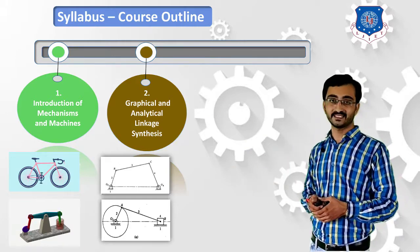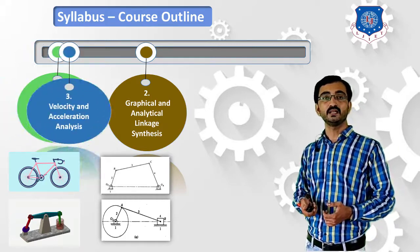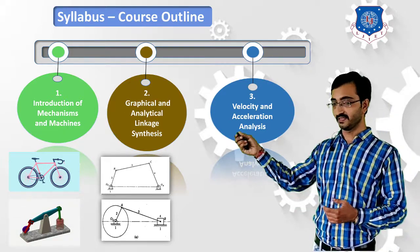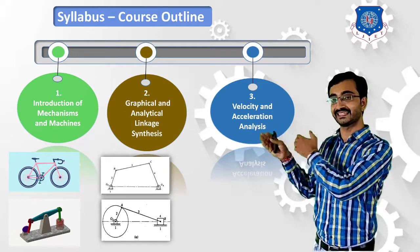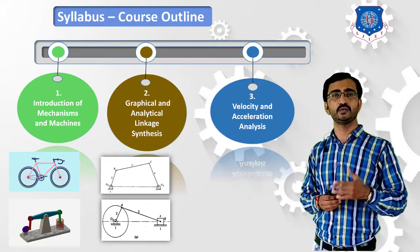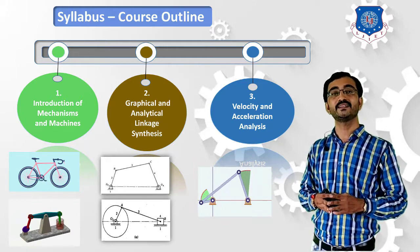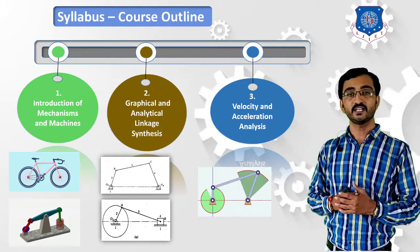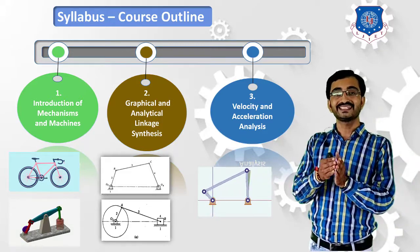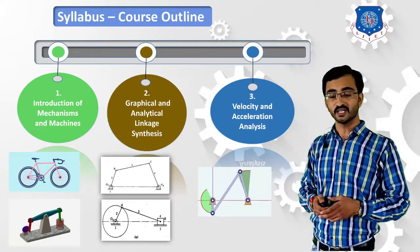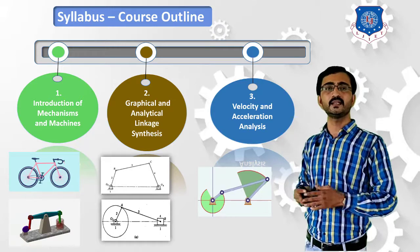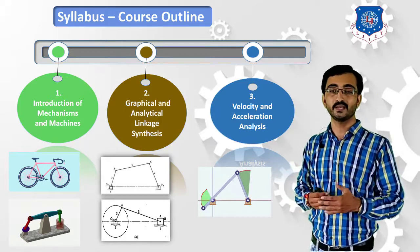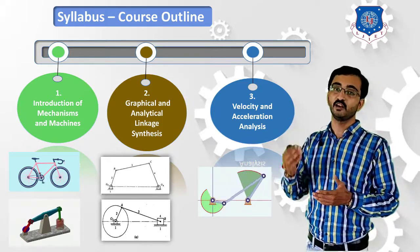In the third chapter we will learn velocity and acceleration analysis. Analysis means analyzing any existing mechanism. Whenever you want to design a machine component you must identify which types of forces are produced in that mechanism. To understand those forces you must identify the velocity and acceleration of that component. So in the first three chapters we learn purely about various types of mechanisms, how to design them, and the velocity and acceleration calculations required.